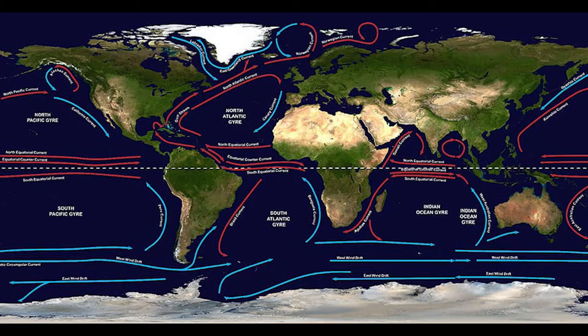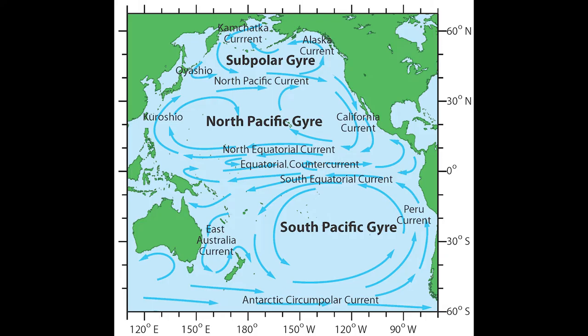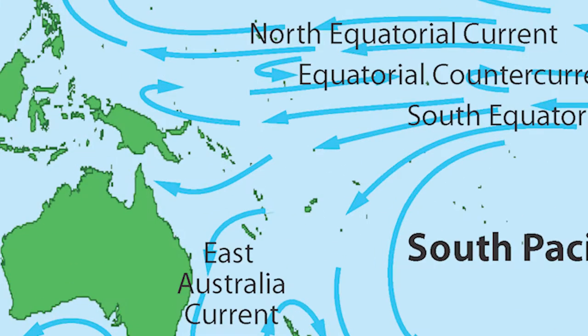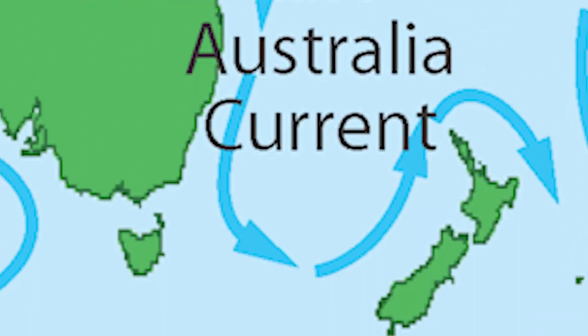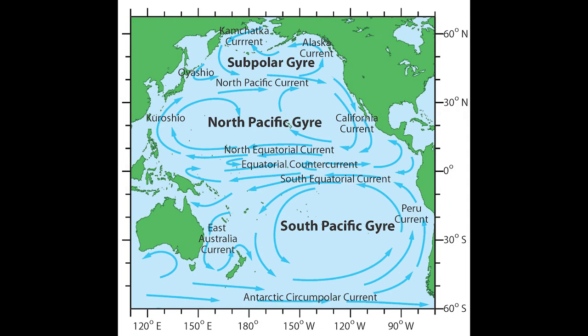Western boundary currents form a part of the ocean gyre system. These gyres, which are primarily wind-driven, circulate water throughout the ocean basins. The areas of these currents considered boundary currents occur where they run parallel to the coastlines of large land masses, with western boundary currents forming on the western boundaries of a given ocean basin.